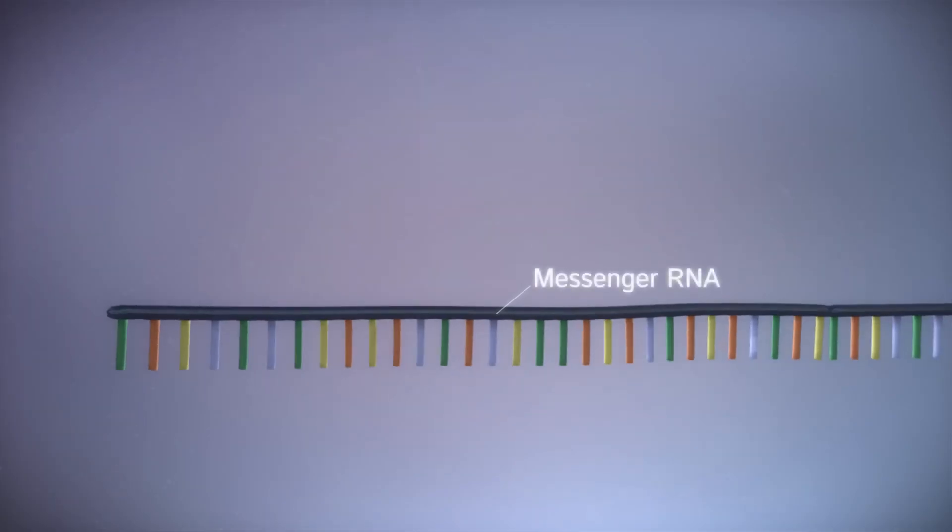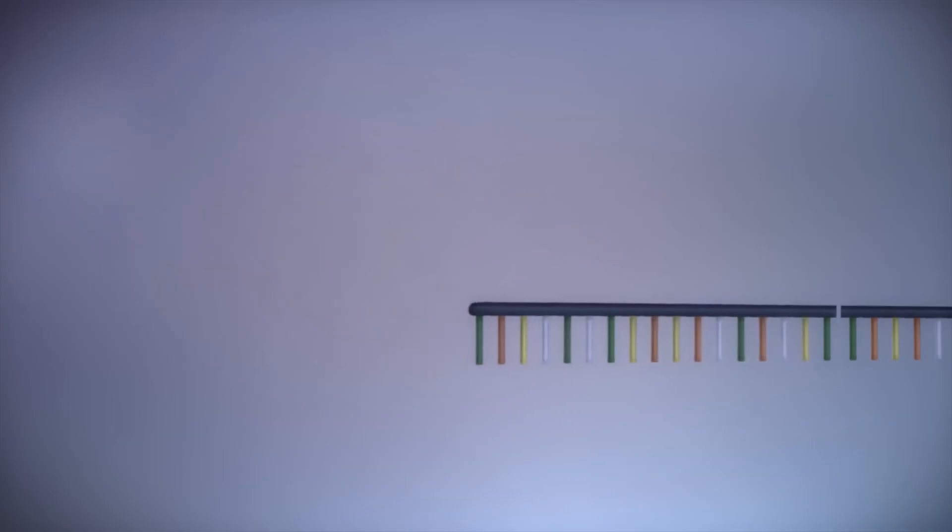Before the messenger RNA can be used as a template for the production of proteins, it needs to be processed. This involves removing and adding sections of RNA.